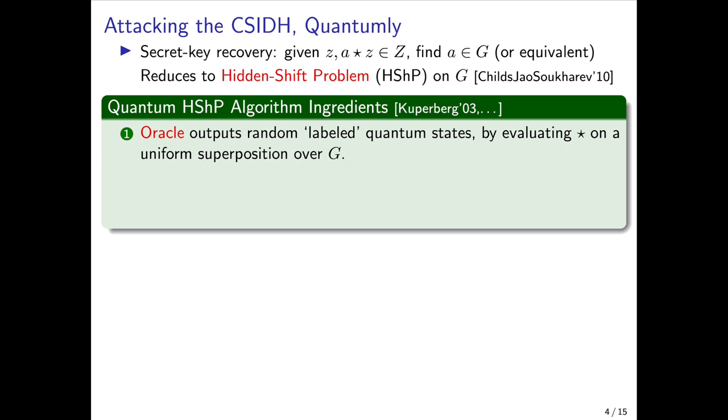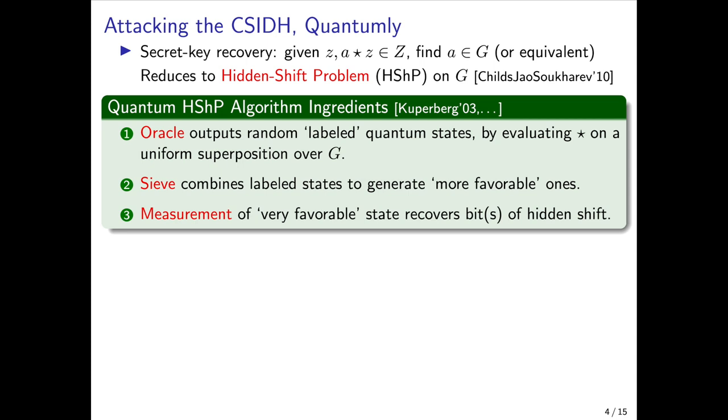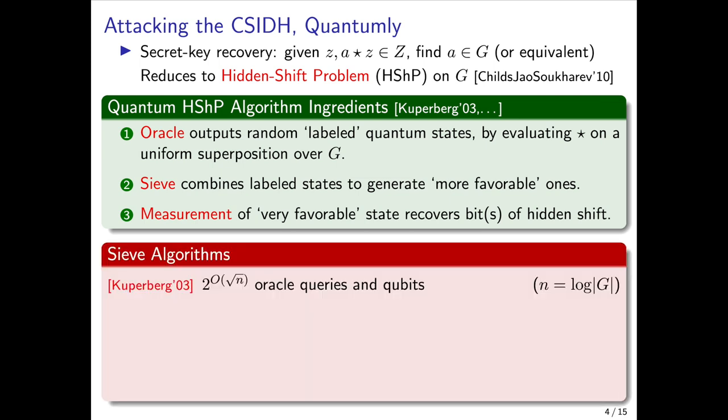There are three main ingredients to a quantum algorithm for hidden shift problems. The first is an oracle that, whenever invoked, outputs some kind of labeled quantum state. This works by evaluating the group action on a uniform superposition over the group. The second component is a so-called sieve, which combines these labeled states to generate more and more favorable states. And the third component takes an ultimate very favorable state that was produced by the sieve and measures it to recover a bit or multiple bits of the hidden shift.